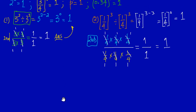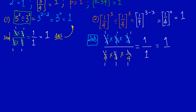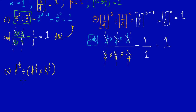For the final example, let's use letters so it's clear this applies beyond numbers. In example three: K raised to the power of one half, divided by K raised to the one upon four multiplied by K raised to the one upon four.